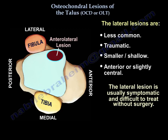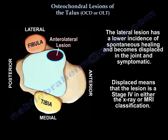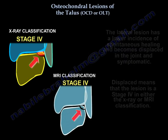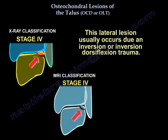Lateral lesions are less common, traumatic, smaller, shallower, and anterior or slightly central. These small, shallow lesions are usually symptomatic and difficult to treat without surgery. They have a lower incidence of spontaneous healing and tend to become displaced in the joint. Lateral lesions typically occur from inversion or inversion-dorsiflexion trauma.